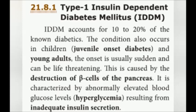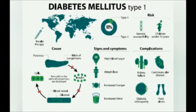Type 1: Insulin-dependent diabetes mellitus. This is caused by destruction of beta cells of the pancreas. It is characterized by abnormally elevated blood glucose levels, i.e., hyperglycemia, resulting from inadequate insulin secretion. Genetic inheritance and environmental factors such as viral infection and acute stress are also causes. Symptoms include high blood sugar, weight loss, increased hunger and increased thirst. Complications include kidney failure, cardiovascular disease, diabetic retinopathy and foot ulcers. Treatment is insulin therapy.